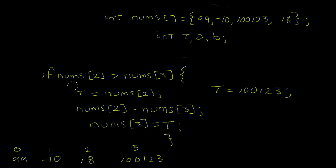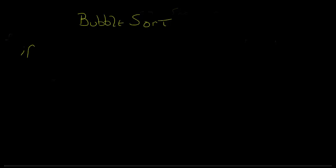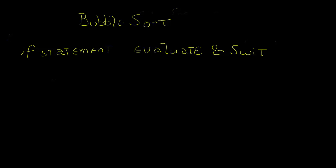So we successfully ordered the values in index 2 and index 3 in ascending order. We did that by a kind of shell game, hiding one value in variable t while we made our switcheroo. But this if statement only makes the rearrangement for the values in index 2 and index 3. What we want to do is reorder this array all the way down for every single index. In order to accomplish that, we're going to need to add a for loop to take us down the array.